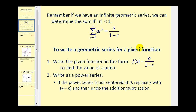To write a geometric series for a given function, we'll write the function in the form f(x) = a divided by the quantity one minus r, where r will be some expression in terms of x. Once we have it in this form, we can identify r and a and write the geometric series. If the power series is not centered at x equals zero, we will have to replace x with x minus c and then undo the addition or subtraction.